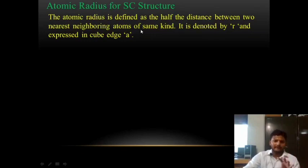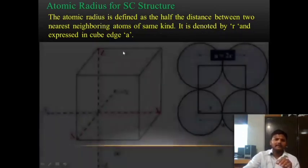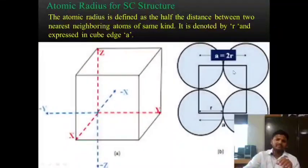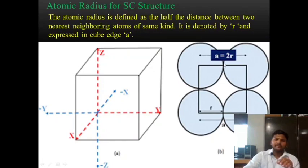It is denoted by r and expressed in terms of the lattice parameter a. In the figure, the full distance from one atom to the next is a, and the atomic radius r is half that distance — from the atom center to the point of contact.